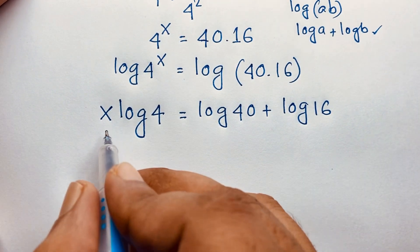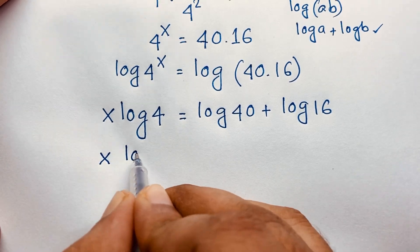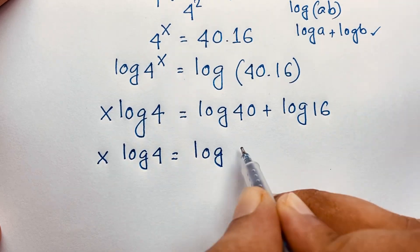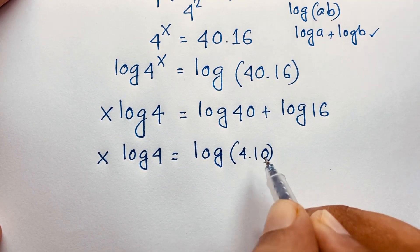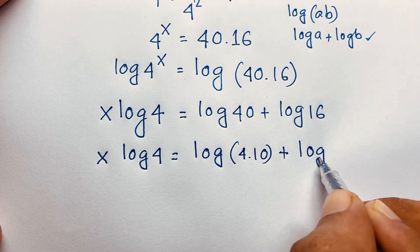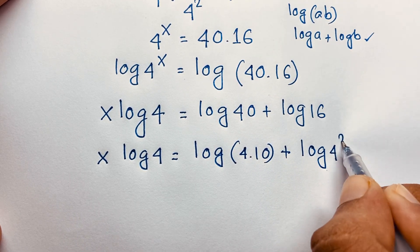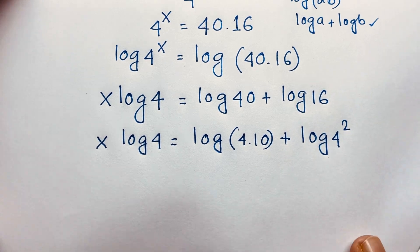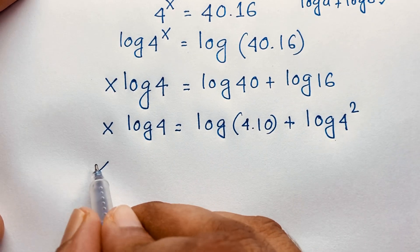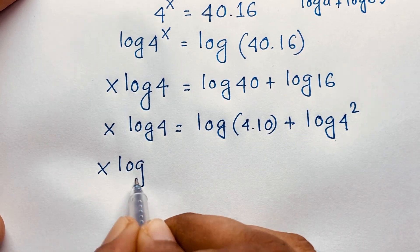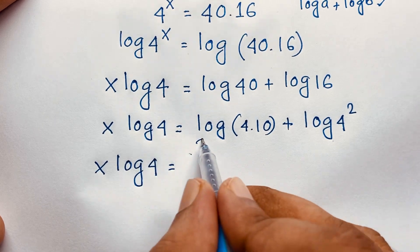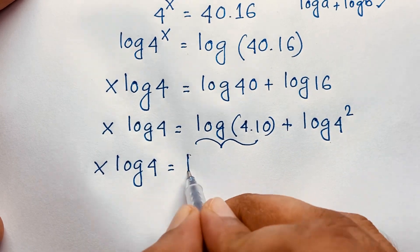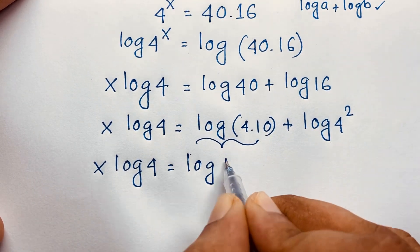You can see this expression: x log 4 is equal to log 40 plus log 16. Now log 16 is log 4 to the power 2. Applying the power rule, this becomes 2 log 4. So x log 4 equals log 40 plus 2 log 4. Expanding log 40, since 40 equals 4 times 10, it becomes log 4 plus log 10.